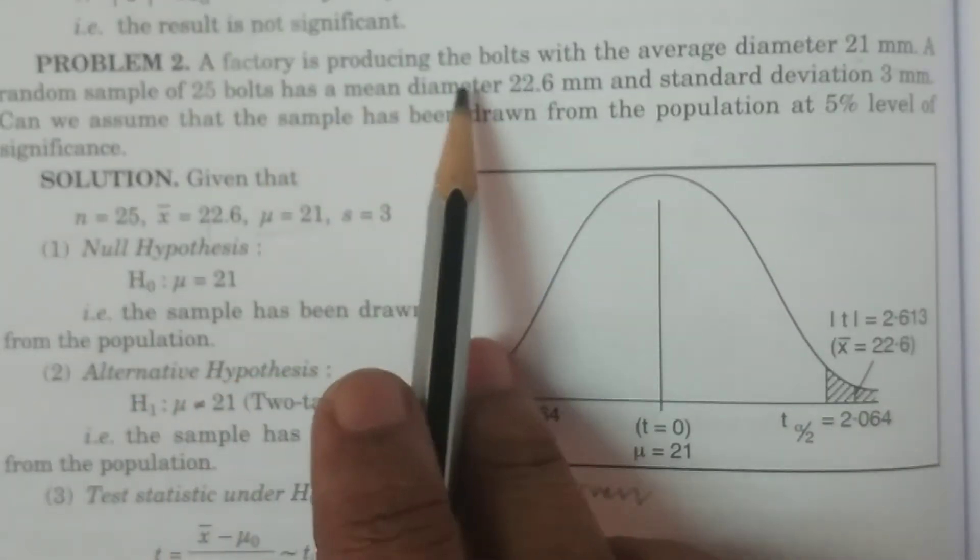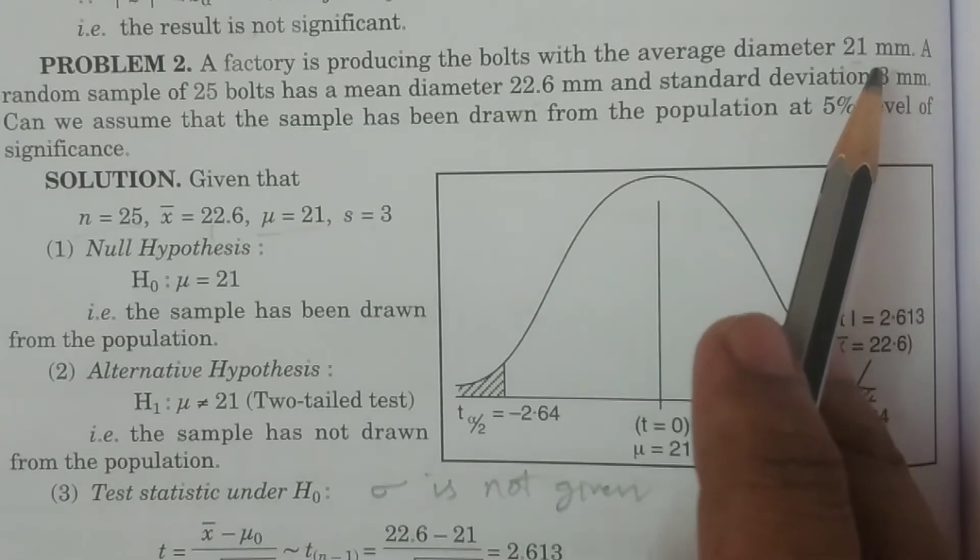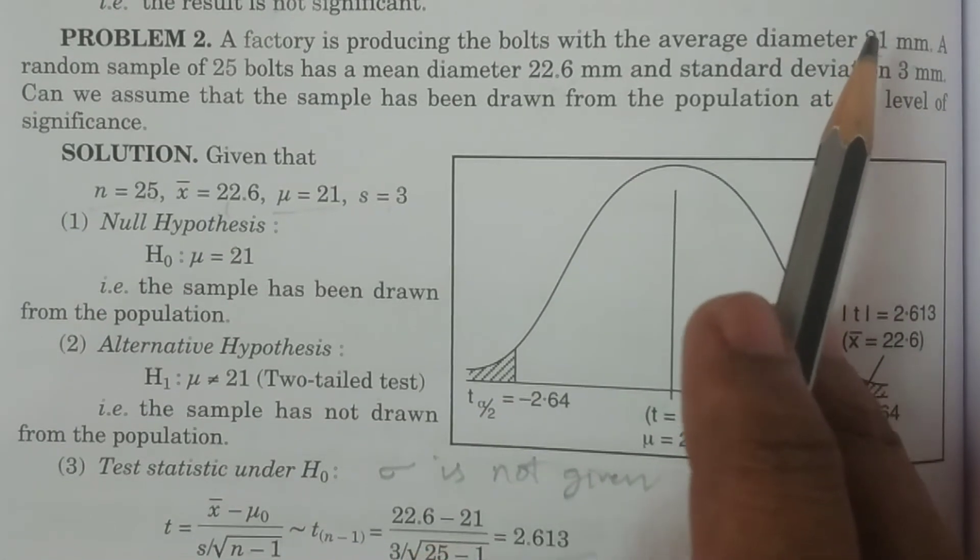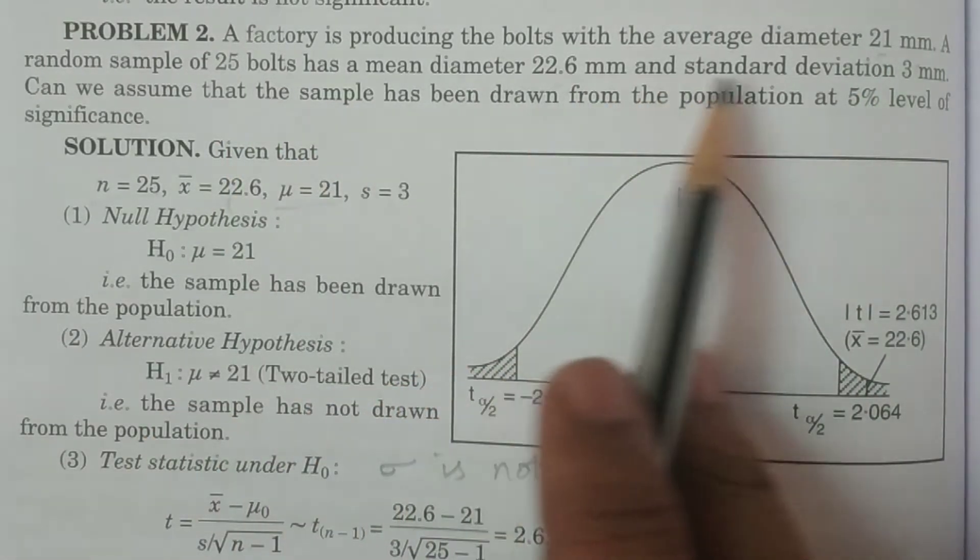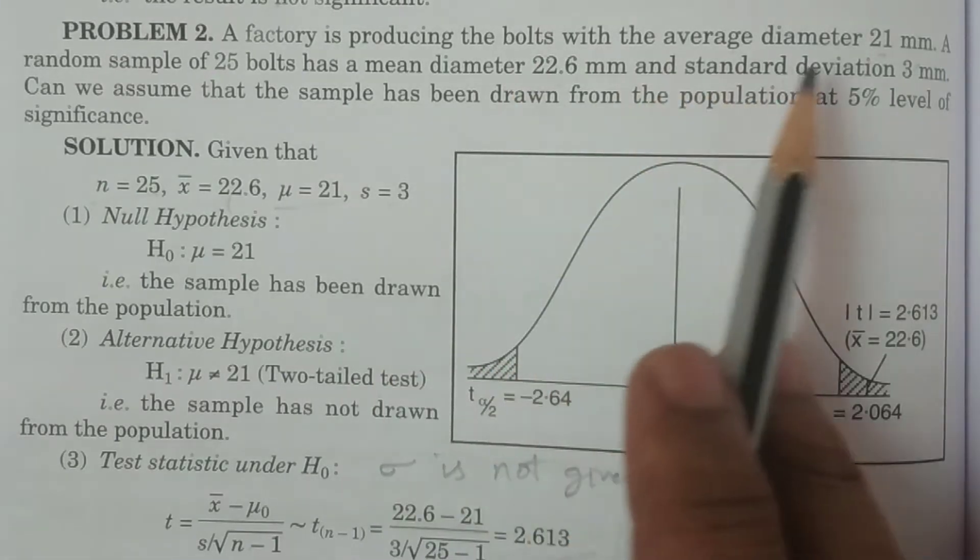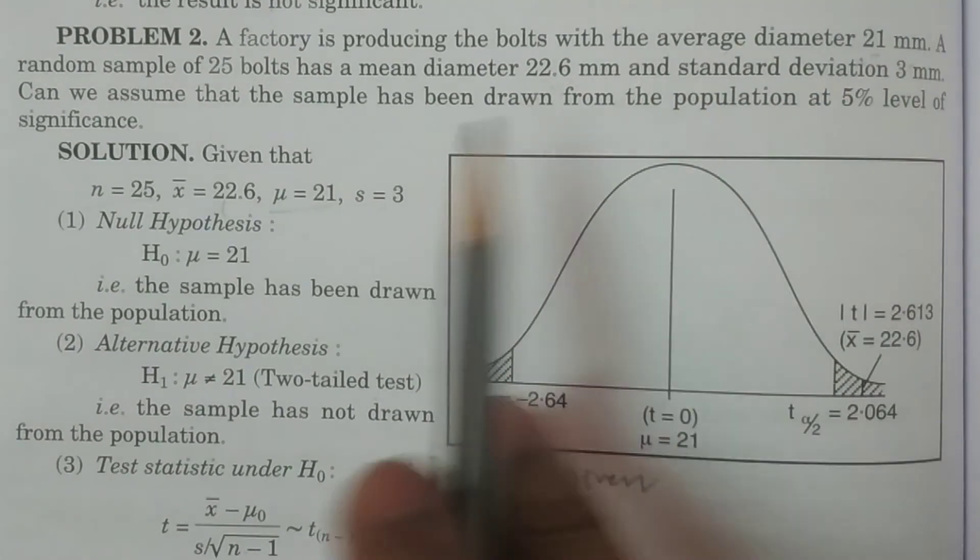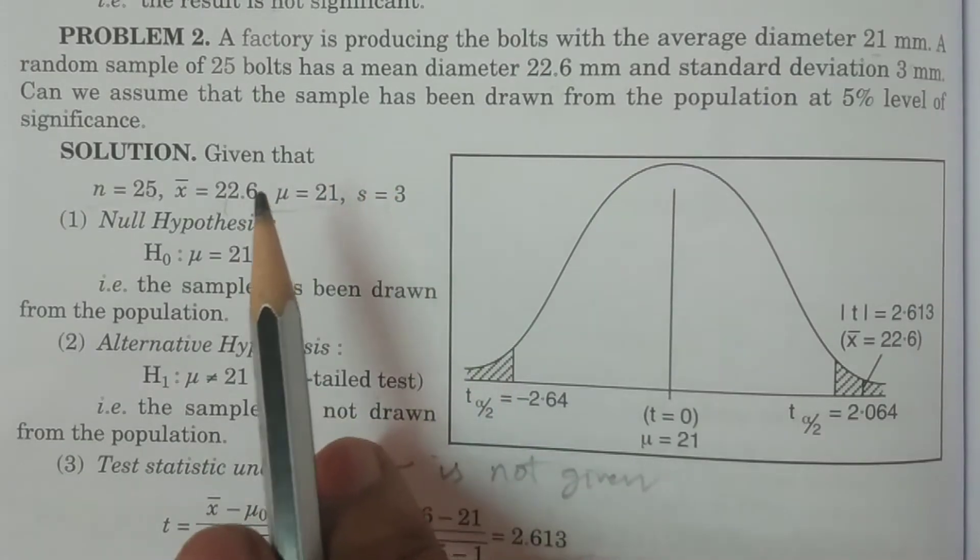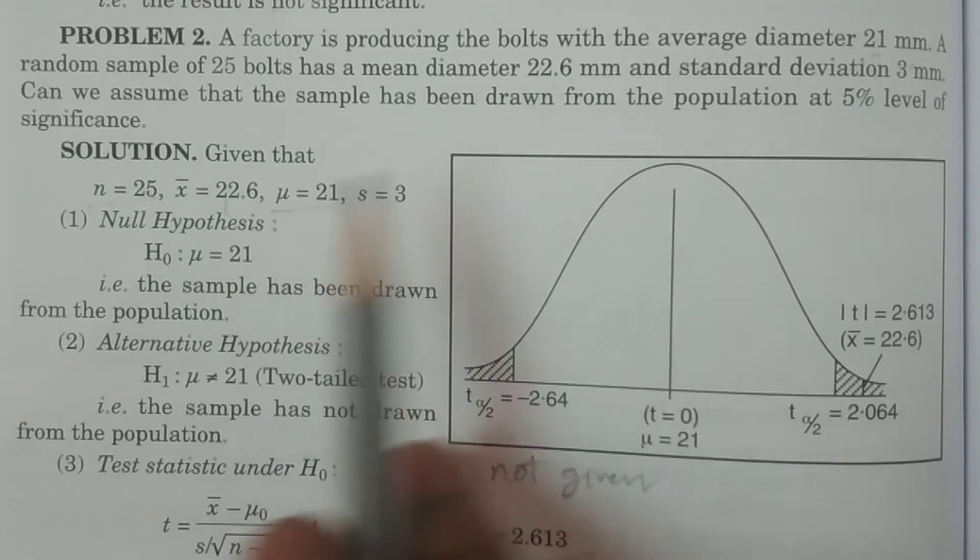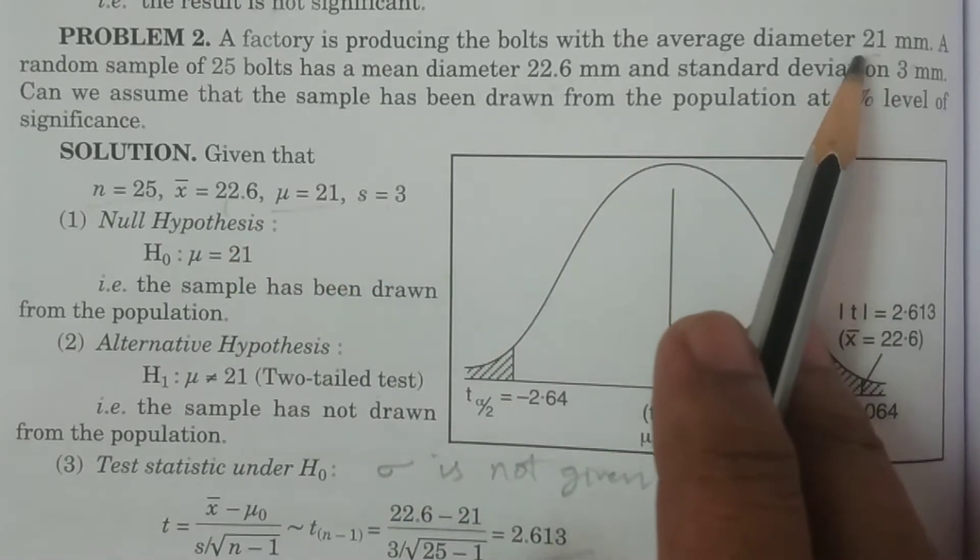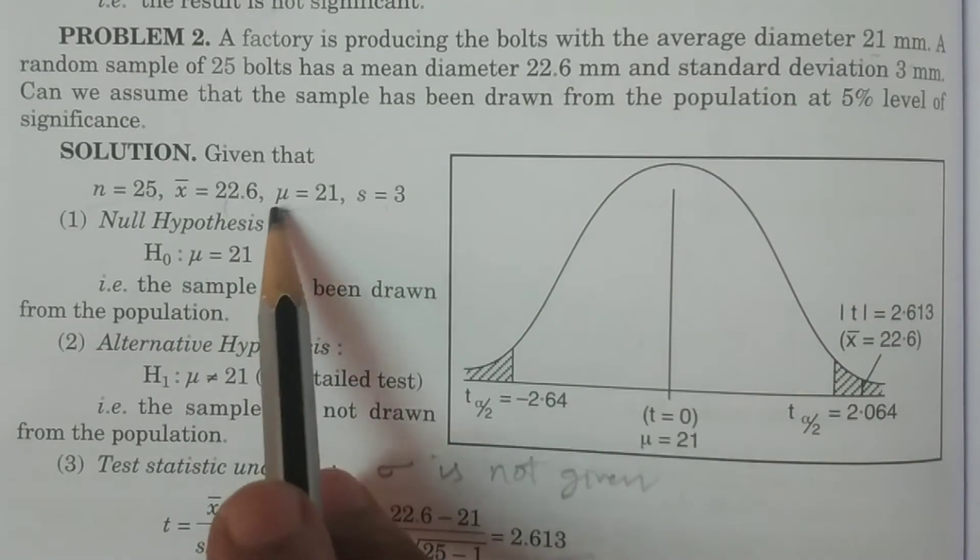A factory is producing the bolts with the average diameter 21 mm. This is a statement. What is the statement? Factory bolts are doing. Average diameter is 21 mm. What is the statement? Factory statement. Company statement. Entrepreneur. Producer. Population mean. Average diameter. Mu is equal to 21. Population mean.